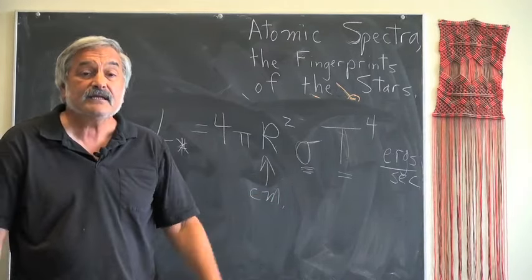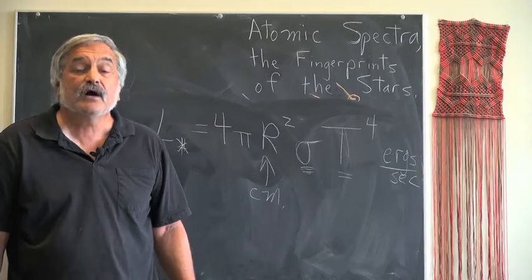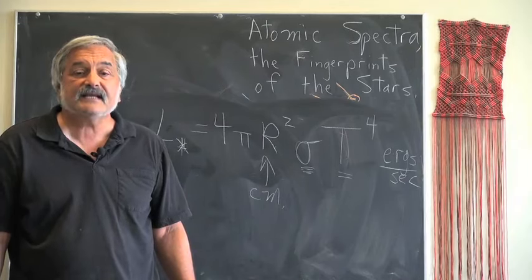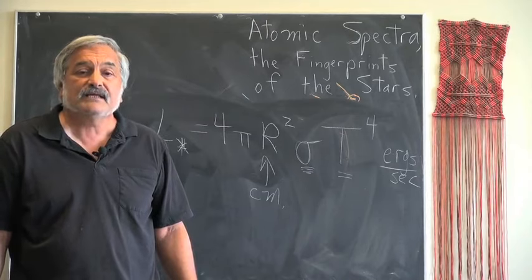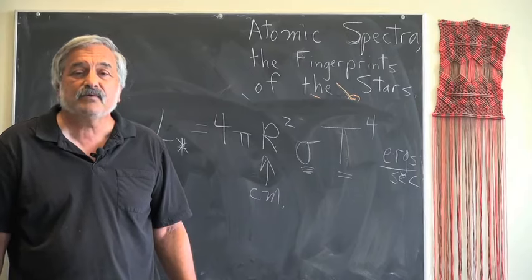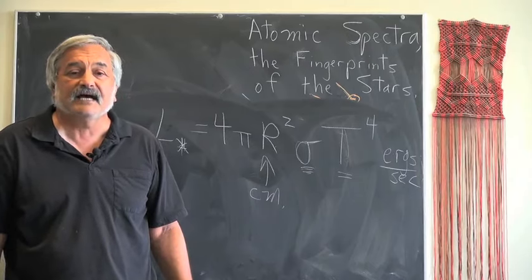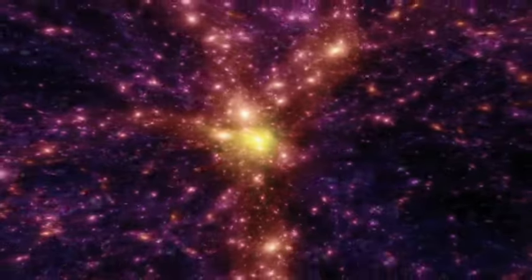But if all we can see is the apparent brightness of the star in the sky, how can we find out the luminosity or total energy output that the star has? Only if we can find the luminosity can we deduce what the radius of the star is. Clearly, we need to determine the distances to the stars. Only with distances in hand can we deduce the actual parameters related to our observations of these faint pinpoints of light in the sky. And that is the subject of our next lecture.